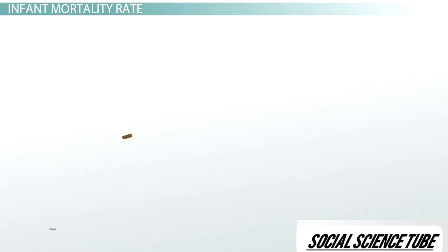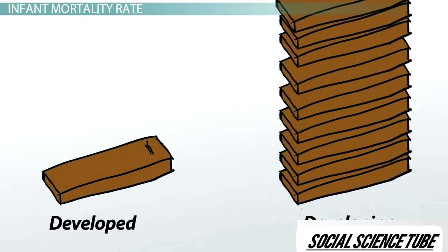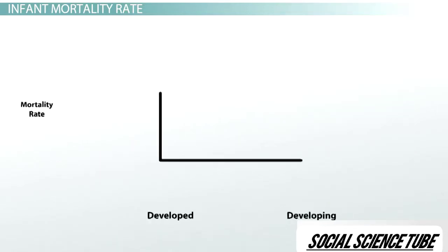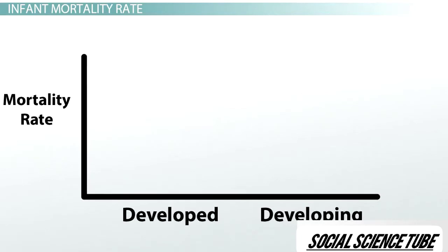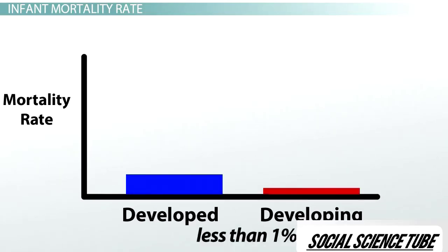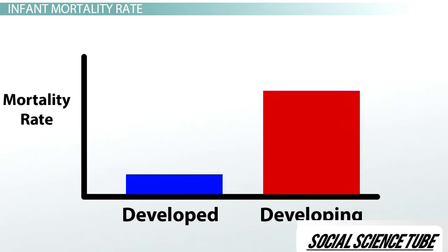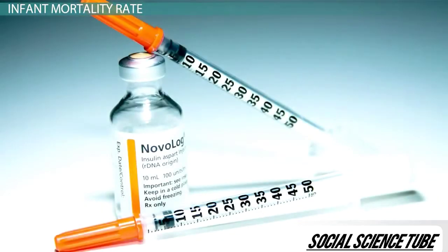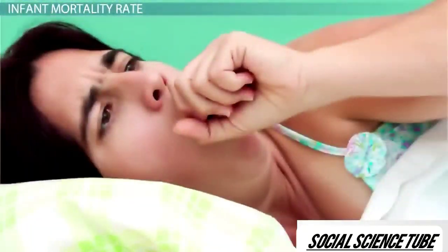The infant mortality rate varies a great deal between highly developed and developing countries. On average, developing countries have an infant mortality rate that is 18 times higher than the rate of developed countries. The most developed countries have an infant mortality rate of less than 1%, while the least developed countries have an average infant mortality rate of around 10%. These high rates are due mainly to limited access to medical care, poor sanitation, and increased prevalence of diseases.